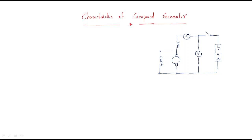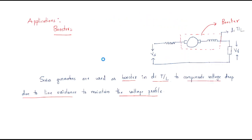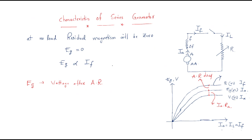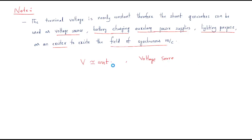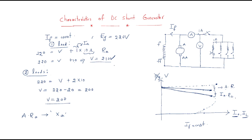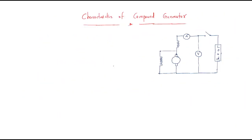Hello everyone. In this session we will discuss the characteristics of the compound generator. Up to now we discussed the different types of generators — series generator and shunt generator. Now we will enter into the compound generator. The name itself, compound, means it is a combination of series as well as shunt windings.